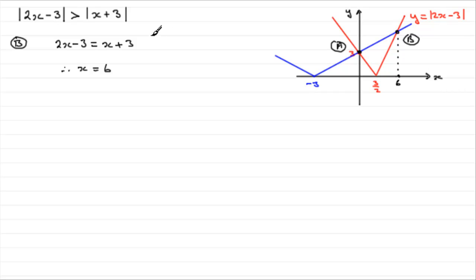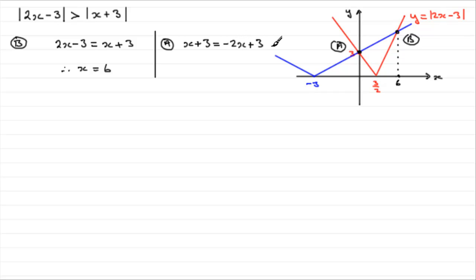For point A, we want the intersection of the reflected part of the red graph with the blue line x plus 3. The reflected section is the negative version of 2x minus 3, which is minus 2x plus 3. Setting minus 2x plus 3 equal to x plus 3, adding 2x to both sides and subtracting 3, we get 3x equals 0, so x equals 0 — which is what we expected for A.